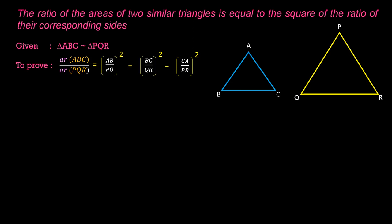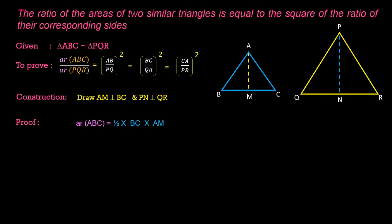To find the area of a triangle, we need the altitude and base. We are taking BC and QR as the bases of triangle ABC and triangle PQR respectively. So we need to draw the altitude to their bases from the opposite vertex. Construct AM perpendicular to BC and PN perpendicular to QR. The area of triangle ABC equals half times BC times AM, and the area of triangle PQR equals half times QR times PN.